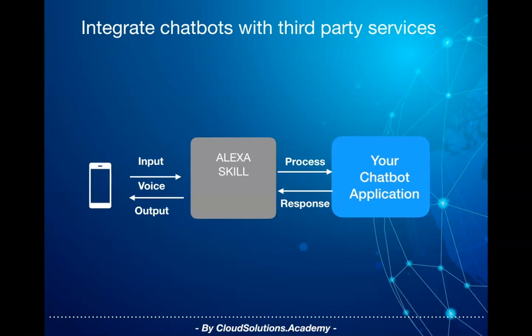Similarly, if you need to make your chatbot available over Alexa, you need to wrap it as an Alexa skill using the Alexa Skills Kit interface. Once your skill is enabled in Alexa by the user, any voice message would be intercepted by your skill, and you can provide the required implementation and response as per your chatbot implementation.